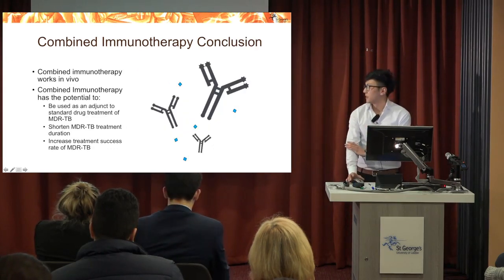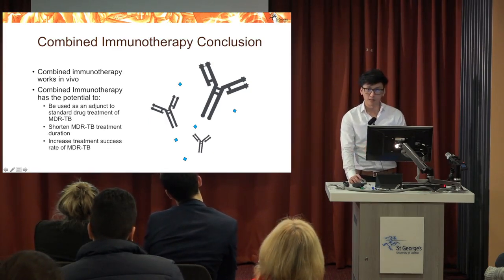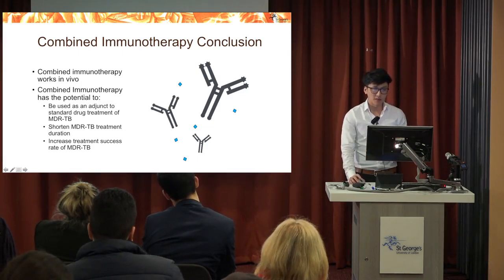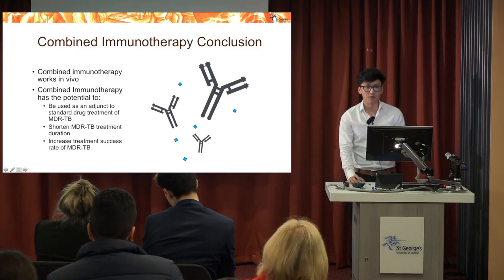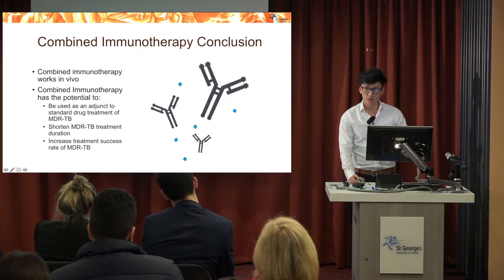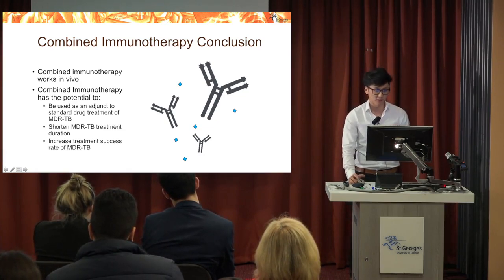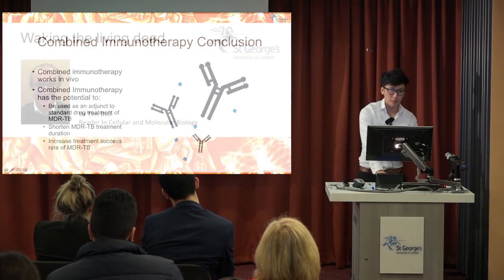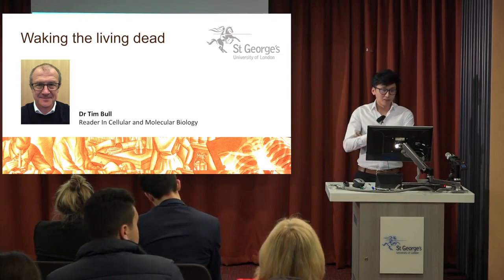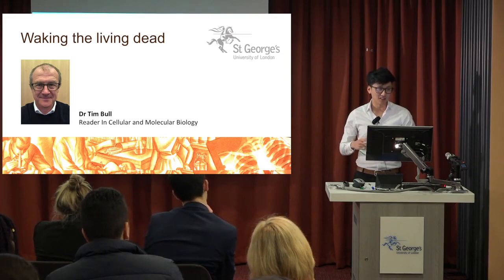Results showed that when combined immunotherapy was started at the same time as TB infection, there was a 50-fold reduction in infection levels. When started 24 hours after infection, there was a tenfold reduction. Even when treatment was delayed to seven days after infection, we still saw a fivefold reduction in levels — a very promising finding showing this therapy can be used in established MDR-TB infection. We also investigated aerosol delivery, using polysorbate 20 to stabilize the antibody as it passes through the nebulizer. Combined immunotherapy has the potential to be used as an adjunct to drug treatment for MDR-TB, shortening treatment duration and increasing the success rate.